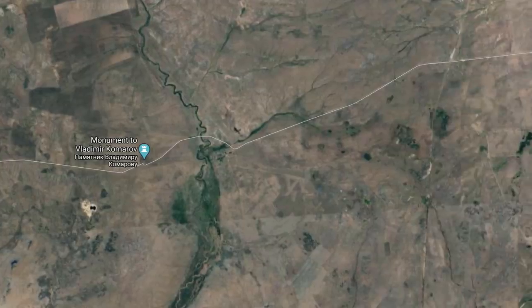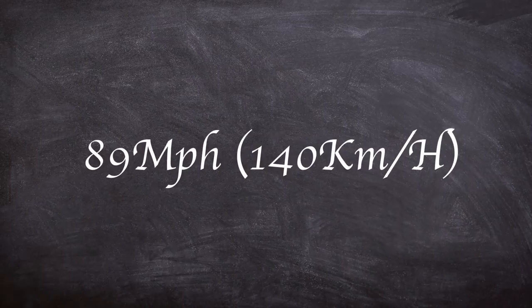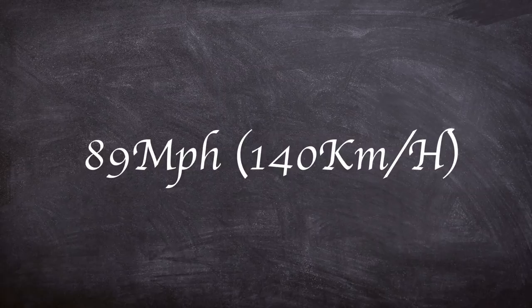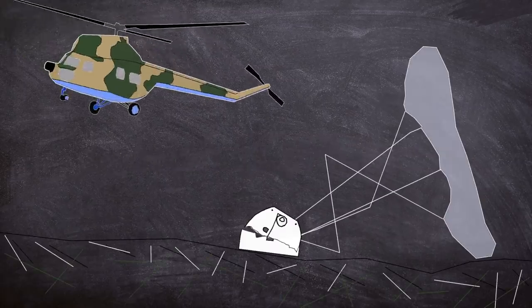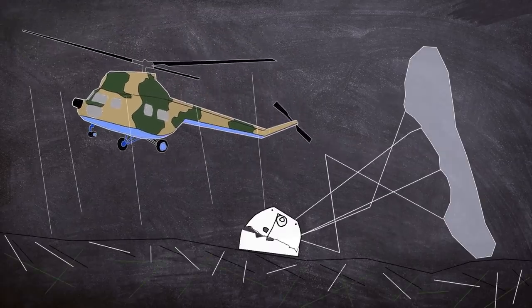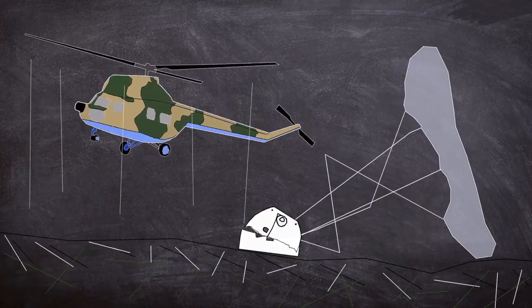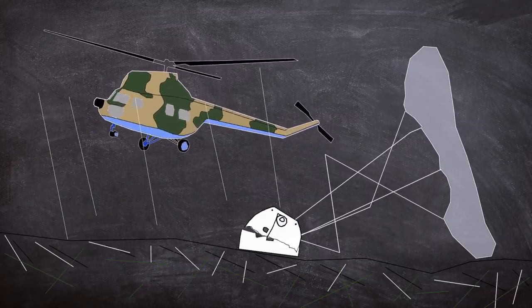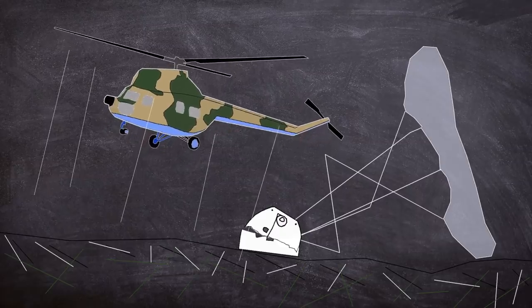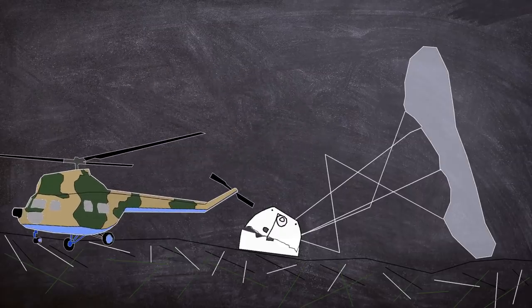A rescue helicopter spotted the descent module on its side with the failed parachute spread across the ground and landed to try and mount a rescue effort. The solid fuel rockets at the bottom of the module had become crushed in the impact and fired, engulfing the craft in flames, leaving a gruesome scene of mangled metal. More rescuers arrived at the crash scene and attempted to fight the fire with extinguishers.